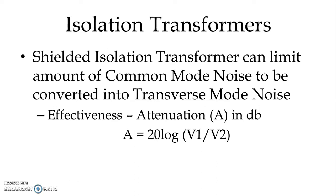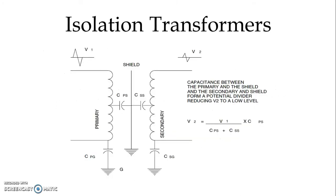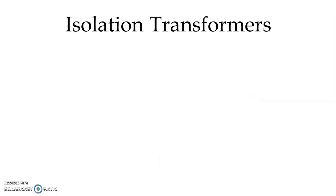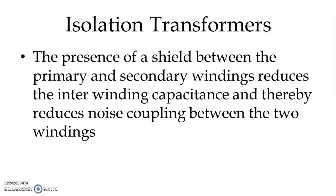We have one shielded isolation transformer which is used to attenuate the primary to secondary. The presence of shield between the primary and secondary winding reduces the interwinding capacitance and thereby reduces noise coupling between the two windings.